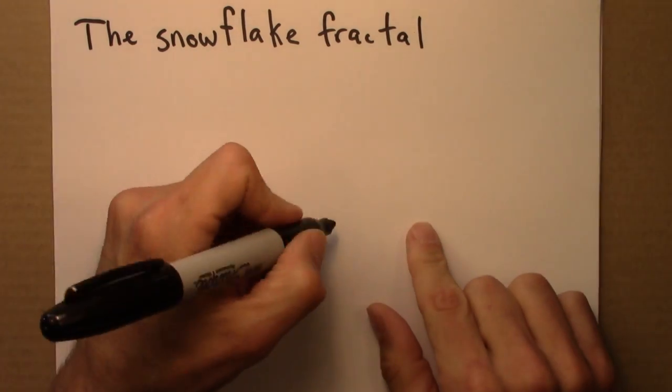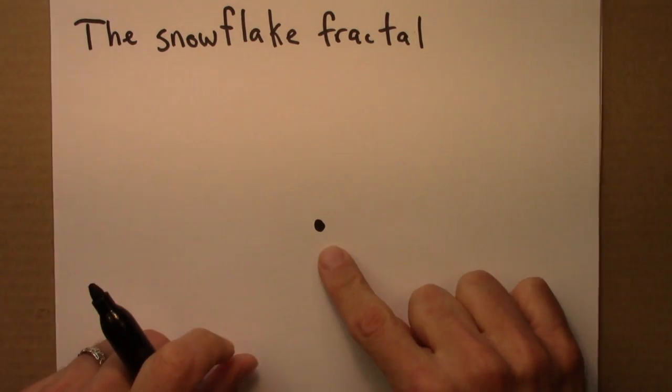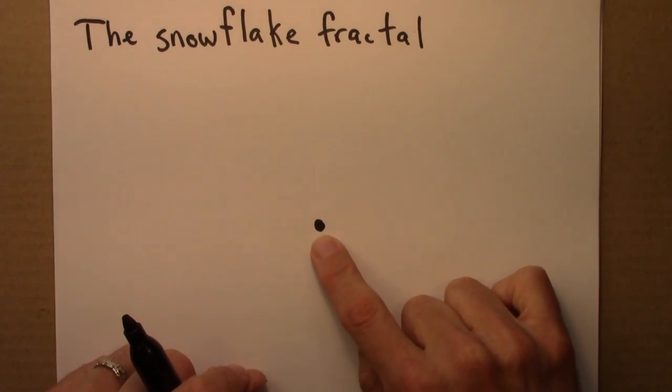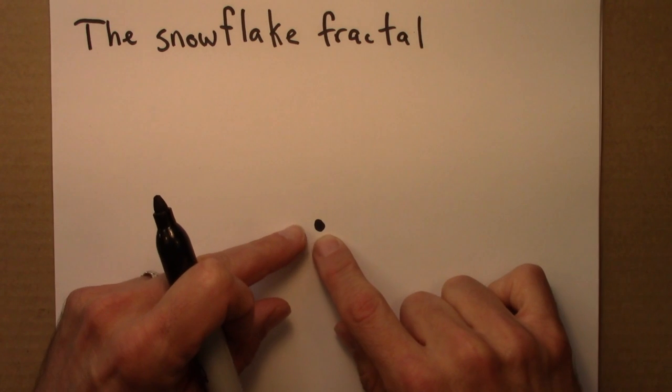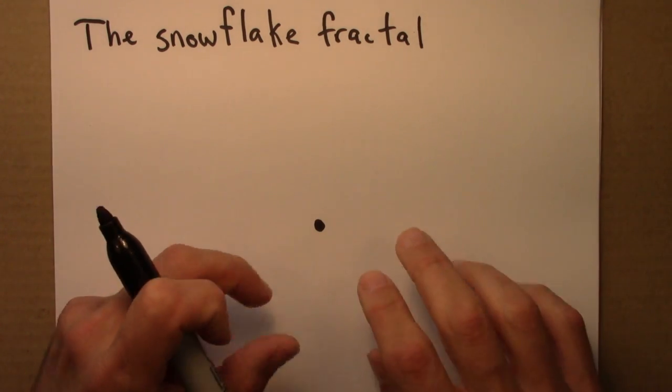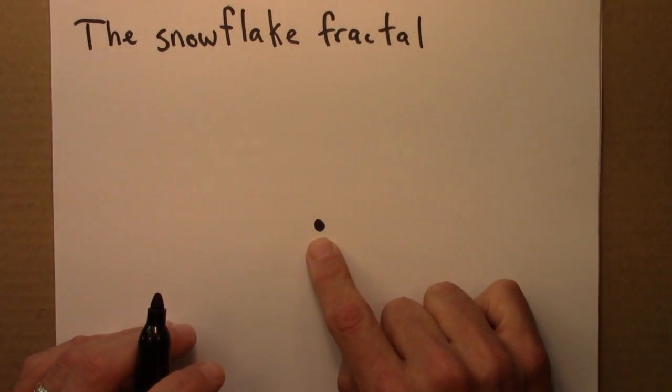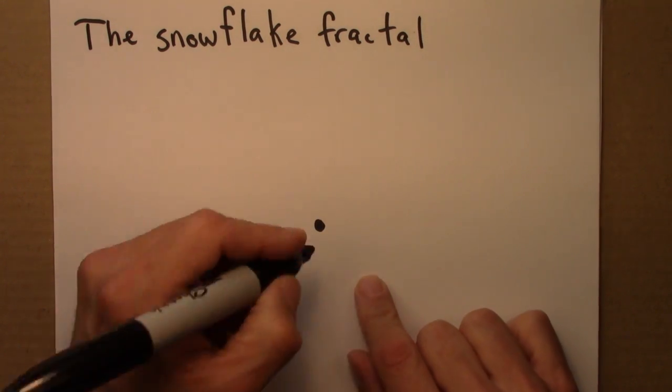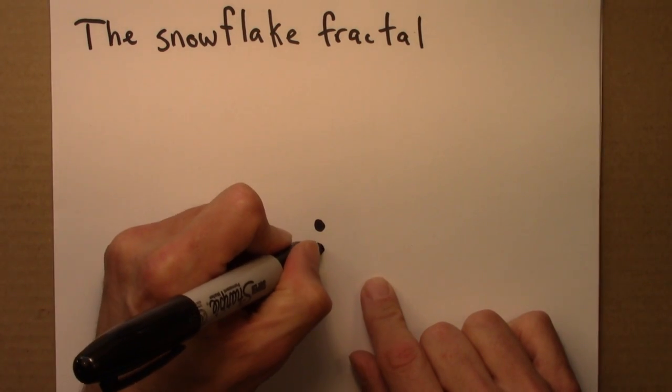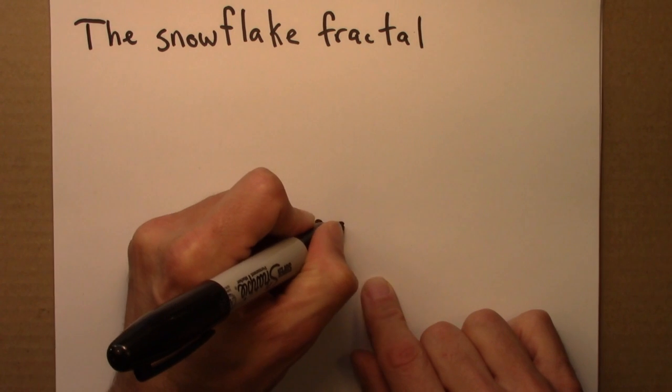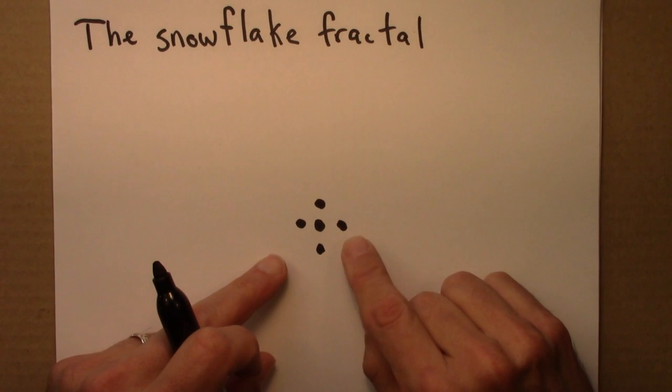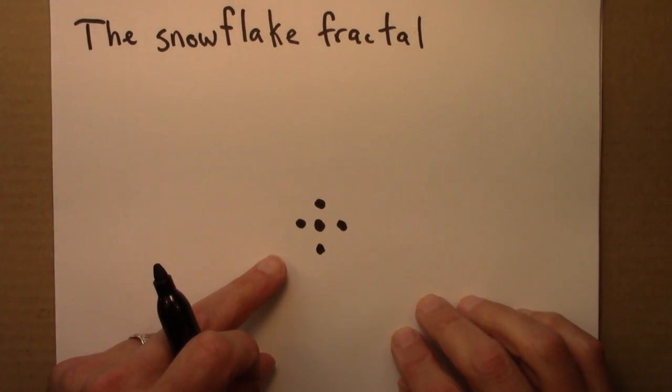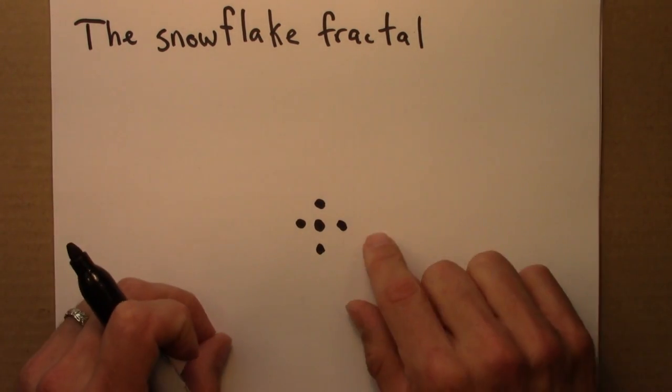We start with a single dot. At every step, I'm going to take the shape that I have, make four copies of it, and place it on the corners. Here's my initial phase, and then the next phase, I'm going to take four copies of this original dot and put them here: one, two, three, four. That's the first step.